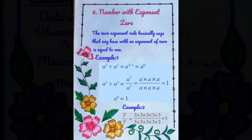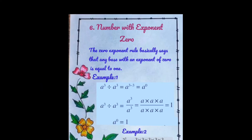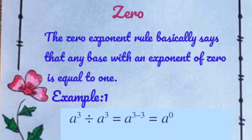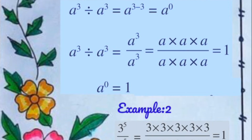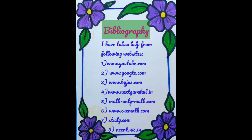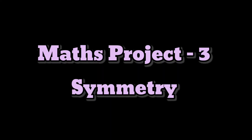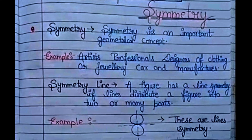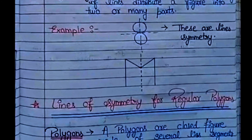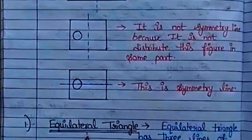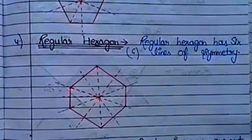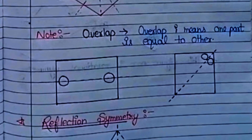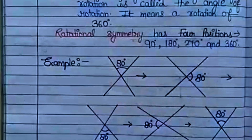Next and the last one is number with exponent 0 — its information and example, and the close look of the page. Next and last page is bibliography — the references used for writing the project. The third project is symmetry.